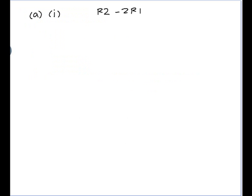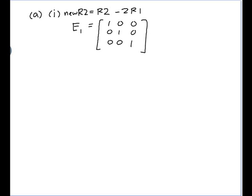Part A, part i: subtract 2 times row 1 from row 2. So the new row operation is: new row 2 equals row 2 minus 2 times row 1. I just need to do that row operation on a 3 by 3 identity. So the elementary matrix E1 starts with the 3 by 3 identity and then applies that row operation. Row 2 becomes: 0 minus 2×1 = minus 2, then 1 minus 2×0 = 1, then 0 minus 2×0 = 0. So that's E1.